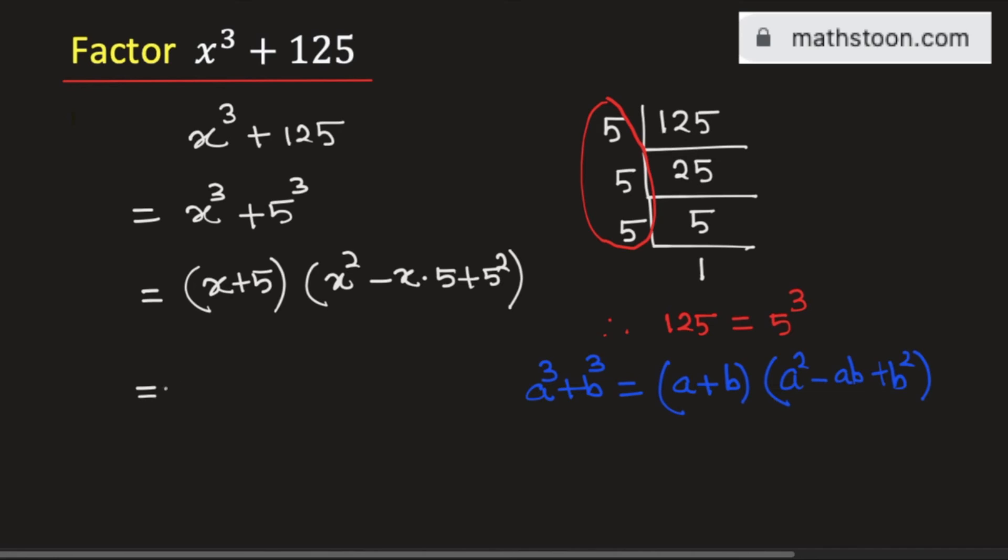Now simplifying, we will get x plus 5 times x square minus 5x plus 25.